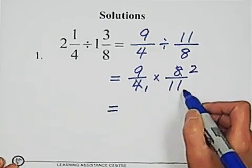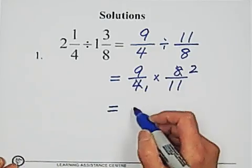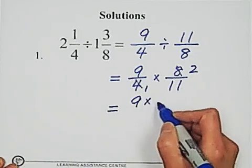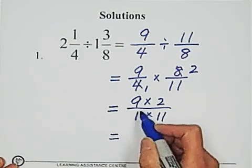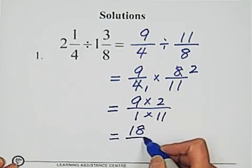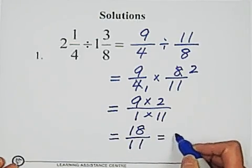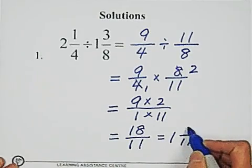No common factor. Multiply 9 multiply 2, 1 multiply 11. You got 18 over 11.